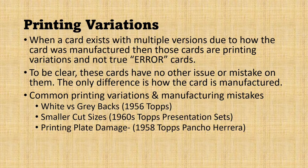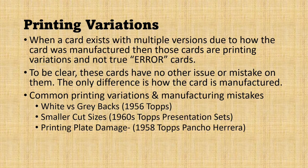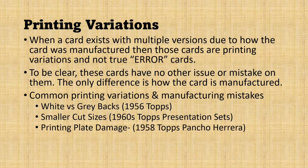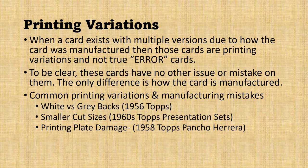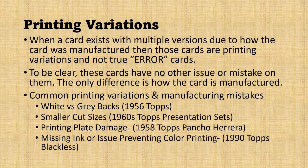Printing plate damage: this happens a lot. The '58 Topps Poncho Herrera missing part of the 'A' is not an error — it's just that the plate wore out and the 'A' started to be less and less pronounced. In fact, there are some good websites where you can see how people put together this version of the card to show how the 'A' became more missing over time as the card was printed.